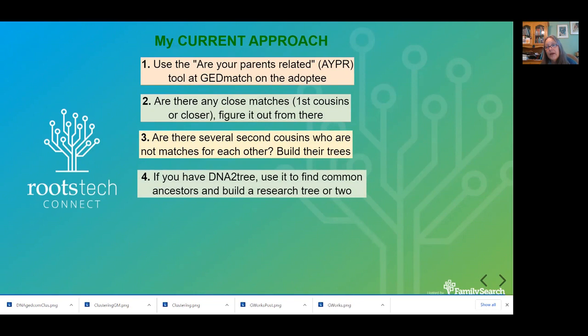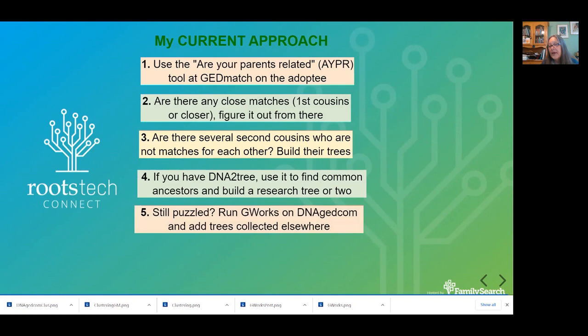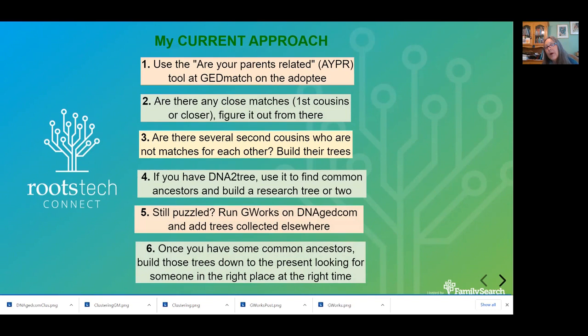When you're stuck working with third and fourth cousin matches, I suggest you try DNA to Tree — sometimes that will turn up common ancestors you can build a tree down from, though it won't work if people have terrible trees. I also really like getting that database from G-Works of all the ancestors in all the trees to see who comes out as a top hit. Once you have common ancestors, you build the trees down and look for where they intersect. I hope this helps you in your research — good luck!